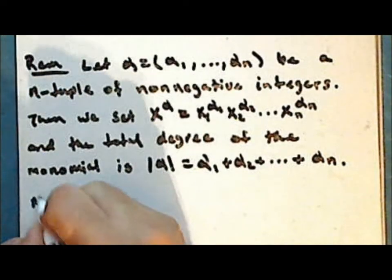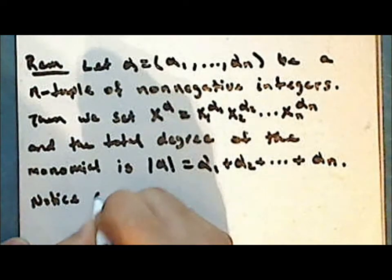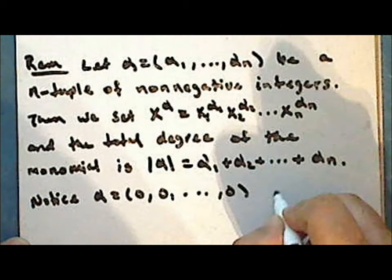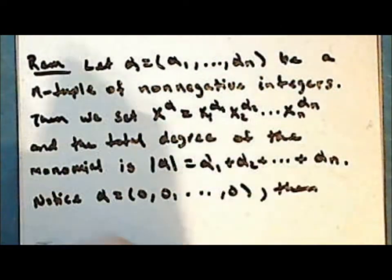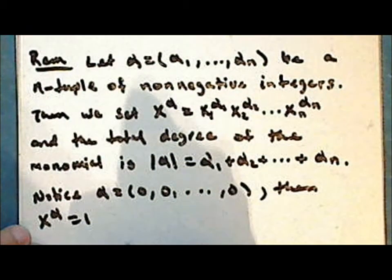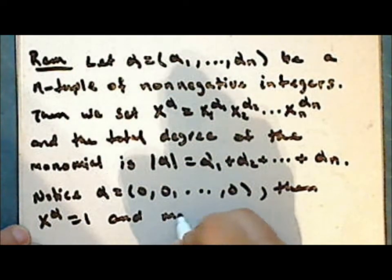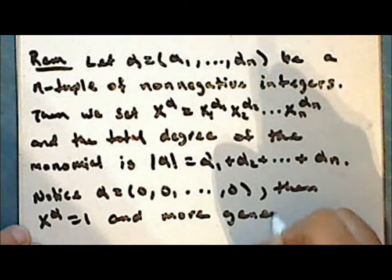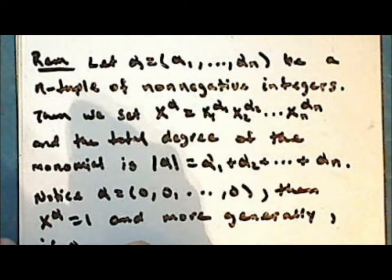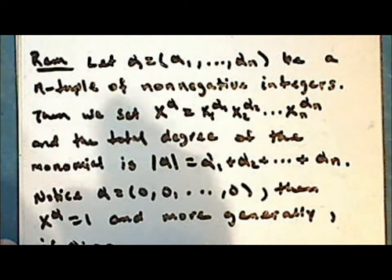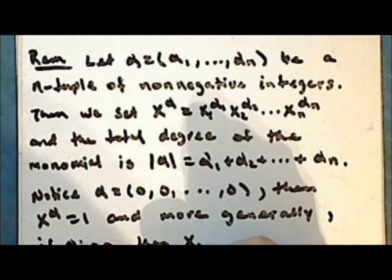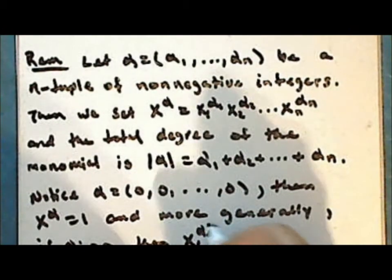Notice that if all of the exponents are 0, then the monomial x to the power of alpha is 1. And more generally, if any one of the exponents alpha sub i is 0, then that term in the product x sub i to the power of alpha i is 1.